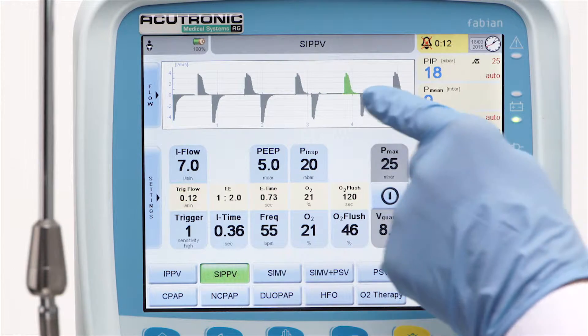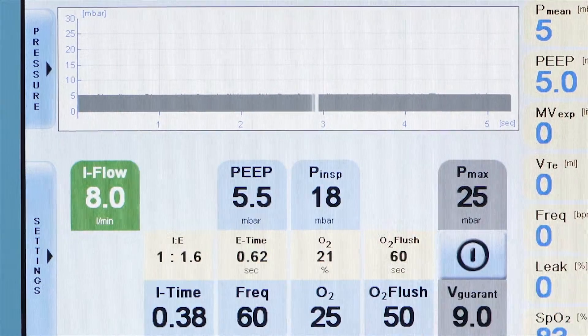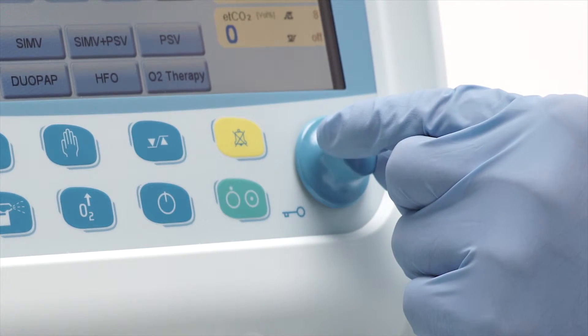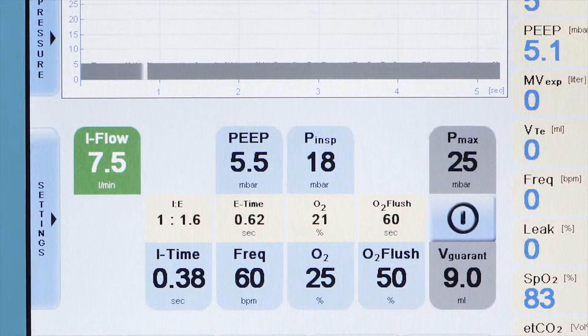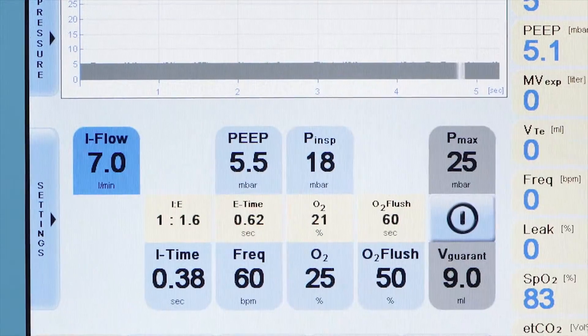The following parameters should be set. iFlow. This should be set according to patient needs. This flow controls the pressure rise time of the inspiration. If set too low, the P-INSP is reached more slowly.